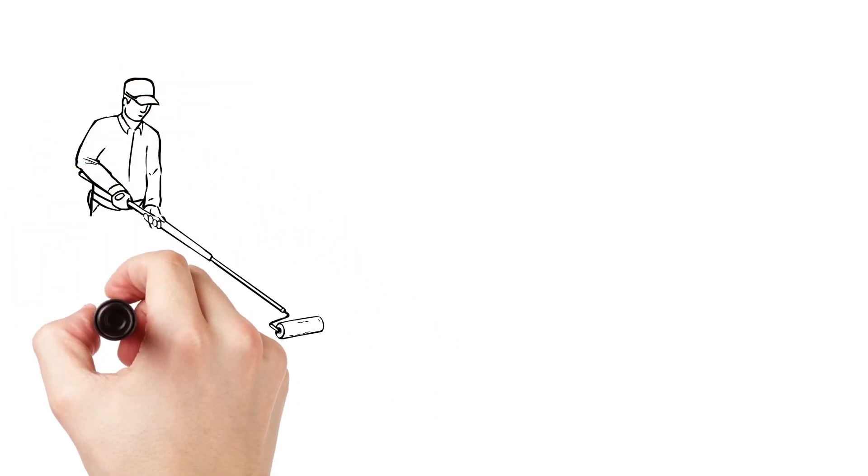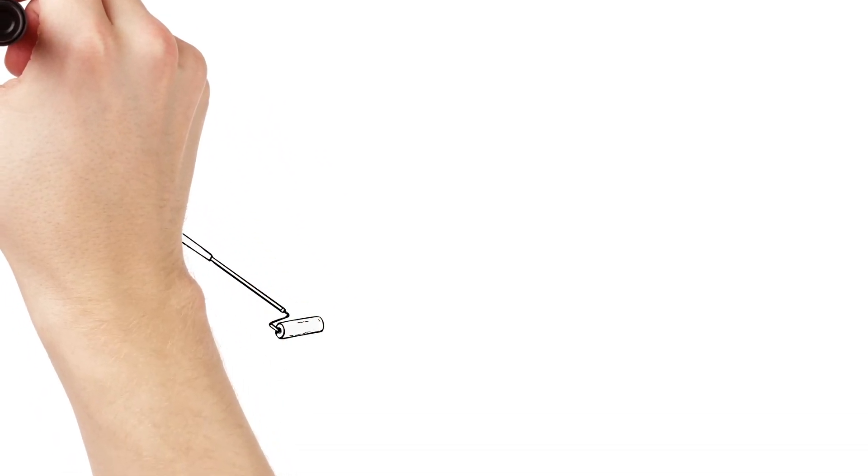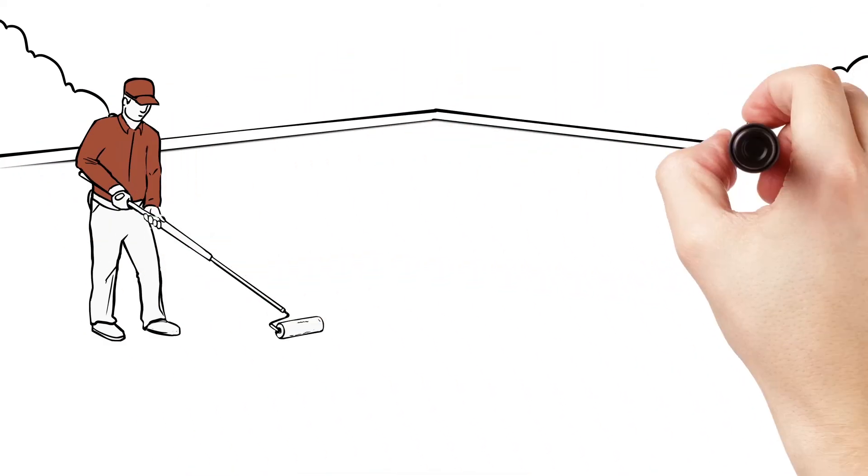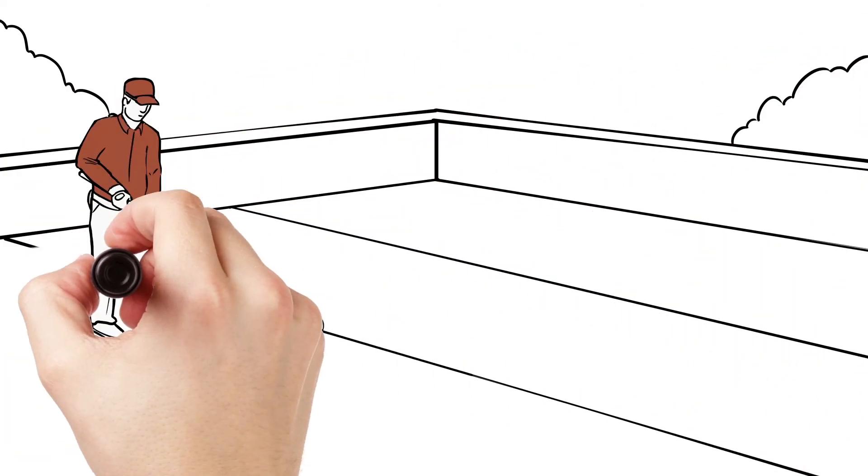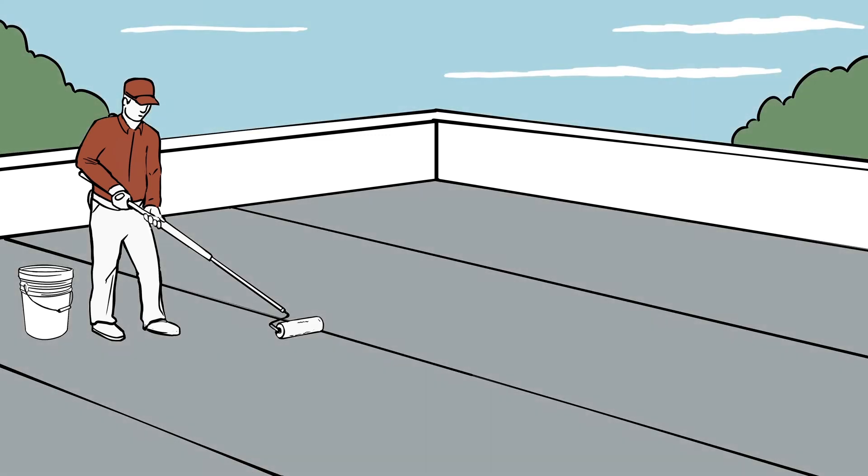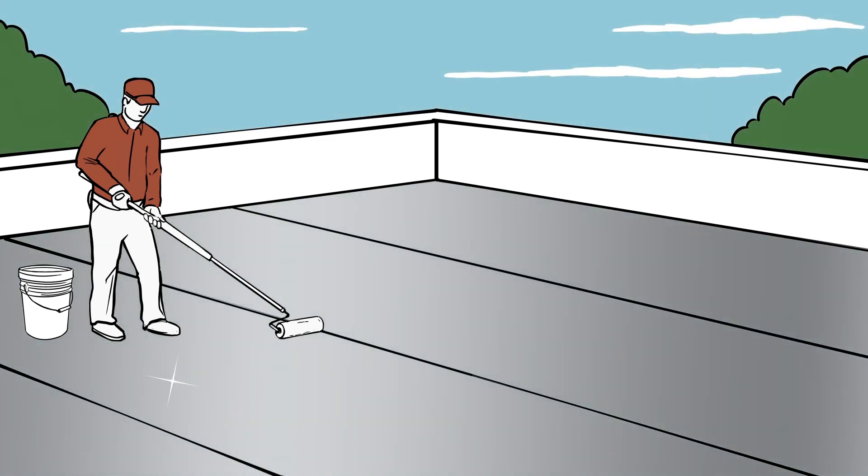Whether the modified bitumen or built-up roofing system is newly installed or has been in place for years, reflective coatings may be applied over any color modified bitumen or built-up roofing membrane. These coatings may be applied merely to enhance reflectance or to restore and extend the reflective performance of an existing roof.